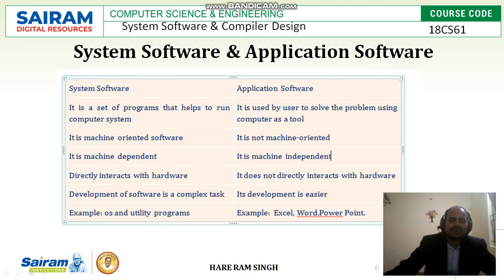The differences between system software and application software: System software is a set of programs that help to run the computer, whereas application software is used by the user to solve a problem using the computer as a tool. System software is machine-oriented — for a 32-bit processor, the operating system should be 32-bit; for 64-bit, the system software should be 64-bit. But application software is not machine-dependent — it is machine-independent. System software directly interacts with the hardware, while application software does not directly interact with the hardware.